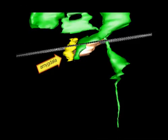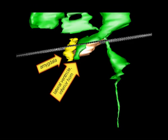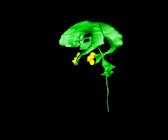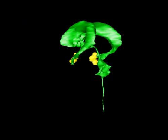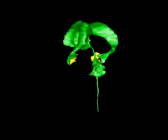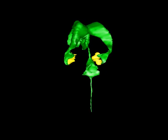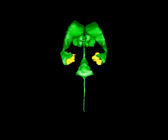We end this movie with a 360-degree rotation of the 3D reconstructed amygdala together with the lateral ventricle. Note the relationship of the amygdala at the tip of the inferior horn of the ventricle.